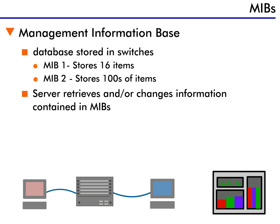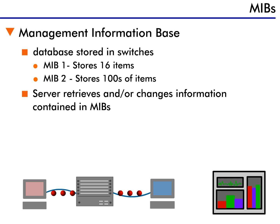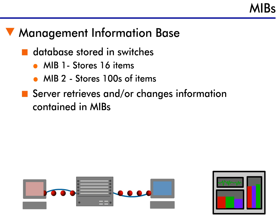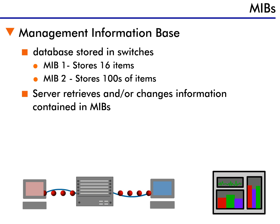As all that information is recorded, it's placed in these MIB files. When a network management application needs information, it uses the SNMP server function to communicate with the switch's SNMP client to retrieve the information contained in the files. In addition, the server can change the information in a file. For example, I can change the IP address of a switch just by editing the information in the file. I can do this remotely, meaning that I don't have to be anywhere near the switch to make the change.